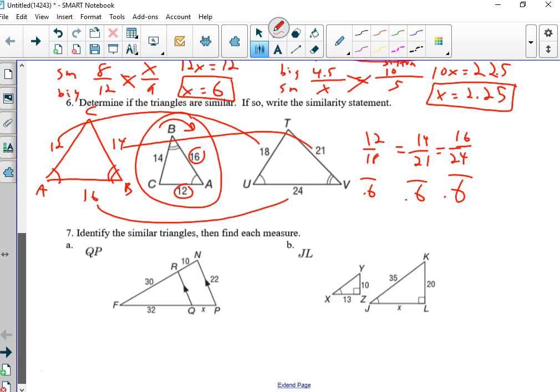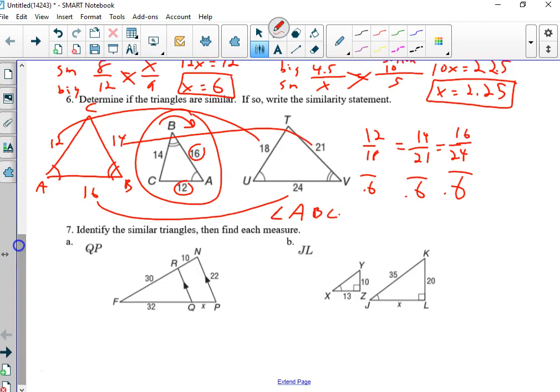Now there's two ways to do this. You can cross multiply all of these, and find out if they work. Or you can just convert them all into a decimal. So 12 divided by 18 is .6 repeating. 14 divided by 21, I'm just typing into the calculator. Guess what? .6 repeating. So 16 divided by 24 is also .6 repeating, which it is. You now know that they are similar. So now you can write a statement. So I'm going to go A, B, C. Triangle ABC is similar to UVT by SSS similarity.